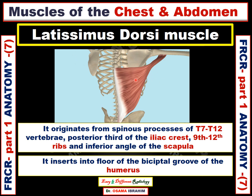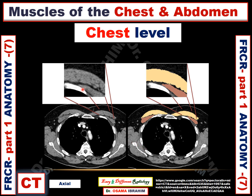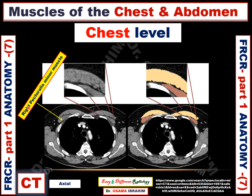Let us see the latissimus dorsi muscle in CT or MRI images. This slide shows another muscle in the anterior aspect of the chest. This is the upper chest level showing the sternum and the branches of the aorta — subclavian, carotid, and innominate vessels. There are two muscles here in the anterior chest wall. The smaller one is called the pectoralis minor muscle, on the right side.